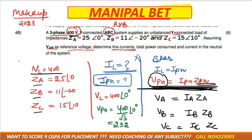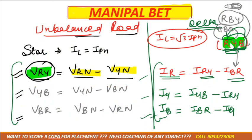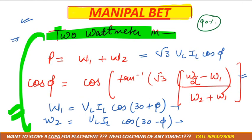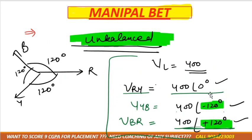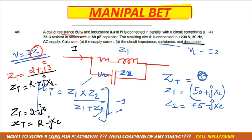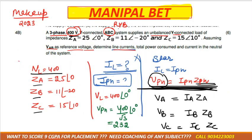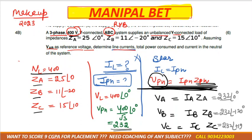For an unbalanced load, the voltages are considered separately. The first phase angle is 0°, the second is -120°, and the third is +120°. So: VA = 232∠0°, VB = 232∠-120°, VC = 232∠+120°.